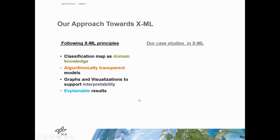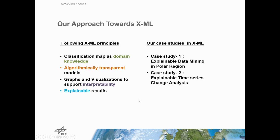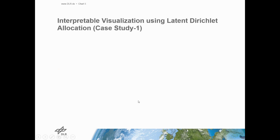We have three case studies in explainable machine learning. The first one is explainable delineation in polar regions. The second is explainable time series change analysis. And the third is explainable transfer learning in vineyards.